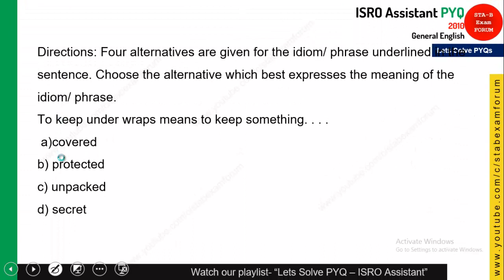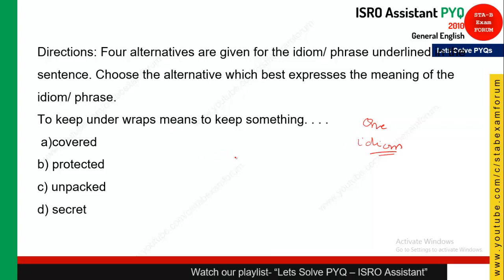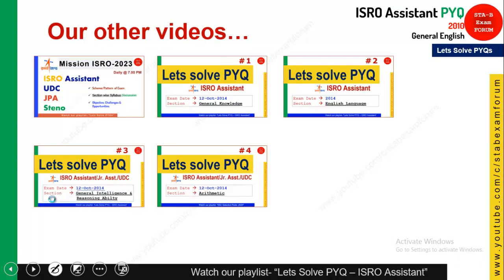The last question: 'To keep under wraps' — this is from idioms and phrases. As I've told you, don't go with the direct meaning. The direct meaning would be covered, protected, or unpacked. But the indirect meaning is secret. 'To keep under wraps' means to keep something secret. So 'secret' is the correct answer.